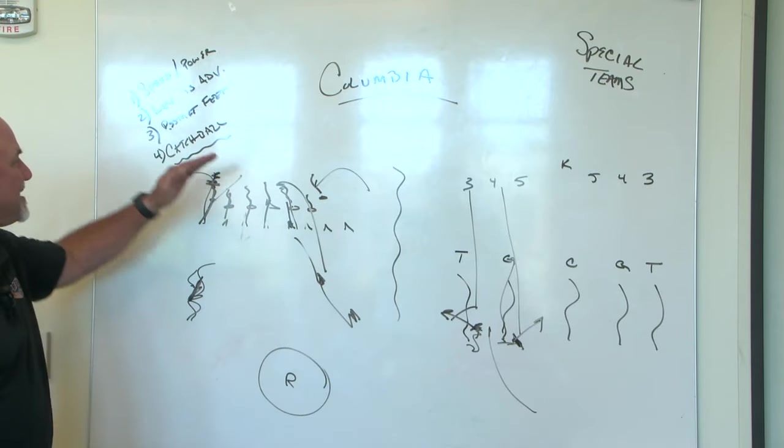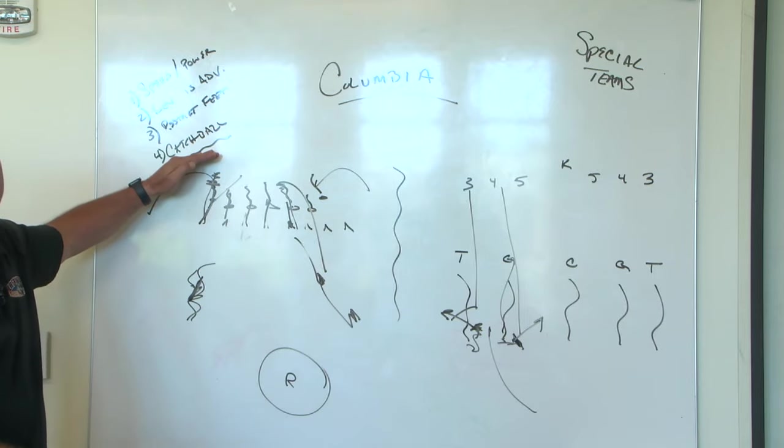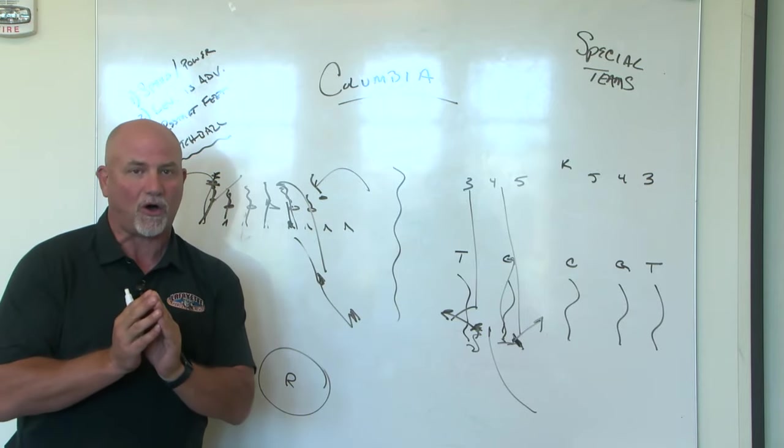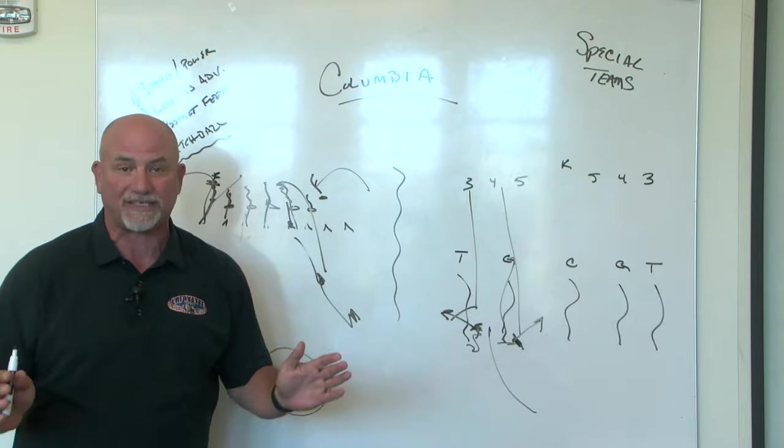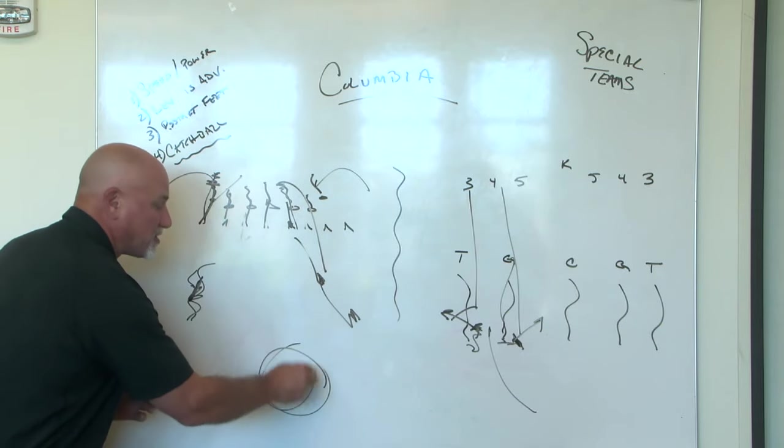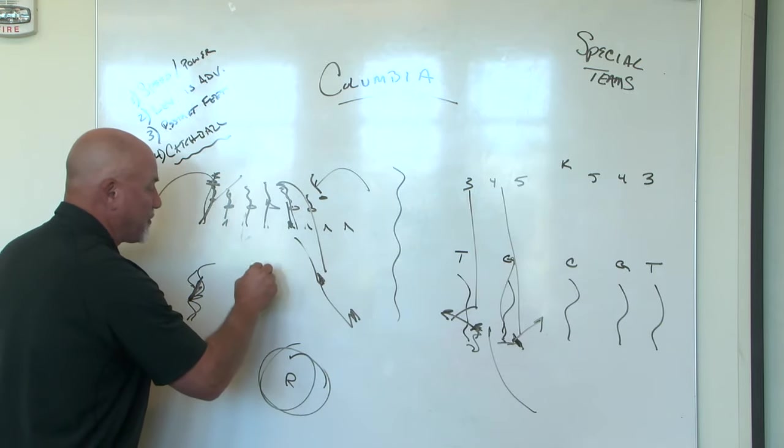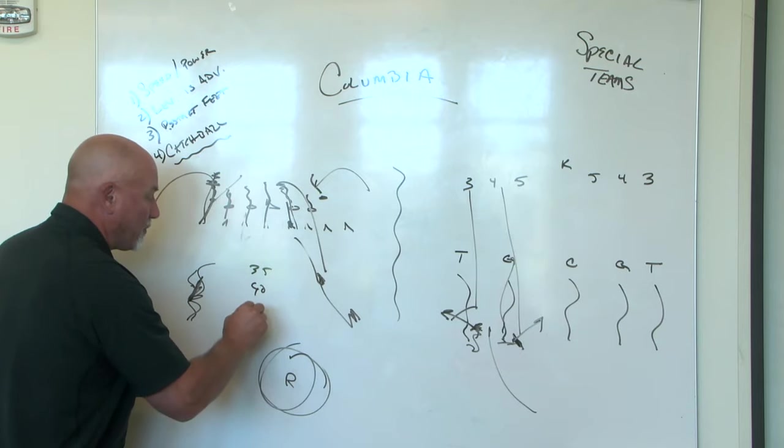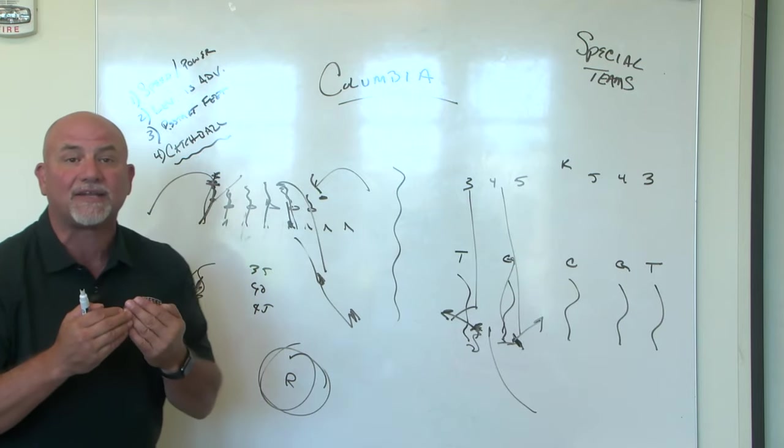The biggest thing we need to do is catch the ball. And Gary knows this. When someone doesn't catch the ball on punt return, I go crazy. You're back there for a reason. Catch the football. Understand whether you need to be 35 or 40 or 45 yards away from the line of scrimmage.